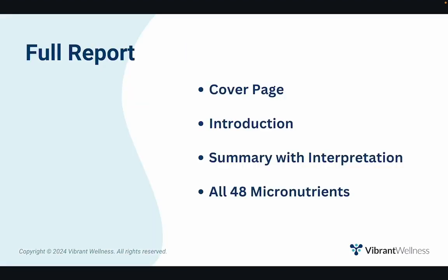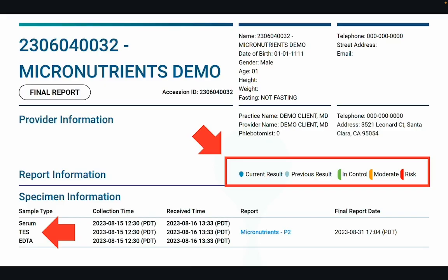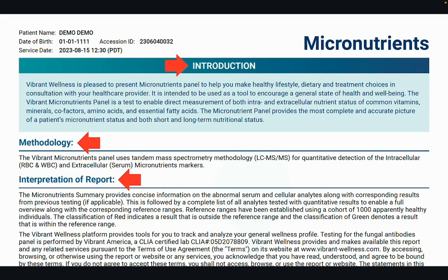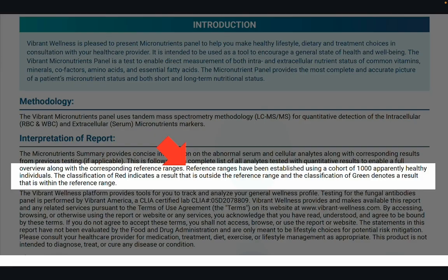The micronutrient sample report includes a cover page, introduction, summary, and then lists all 48 micronutrients. The cover page lists the sample type and the results interpretation key. The introduction pages include the methodology and interpretation of report — I highly recommend reading this page, especially where it states that reference ranges have been established using a cohort of 1,000 apparently healthy individuals. Red indicates a result outside the reference range, and green denotes a result within the reference range.